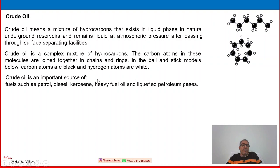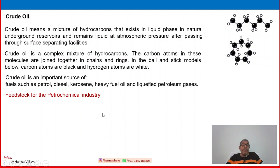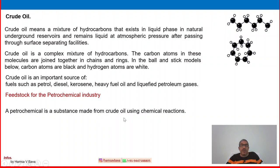Crude oil is an important source of fuels, making important value-added products like petrol, diesel, kerosene, heavy oil, and LPG. Moreover, crude oil can be used as a feedstock for the petrochemical industry. A petrochemical is a substance made from crude oil using chemical reactions.